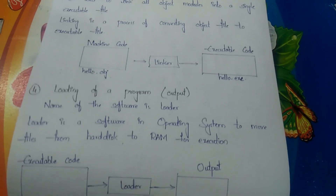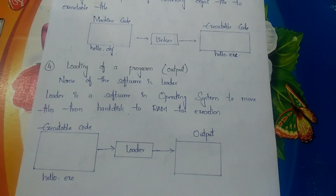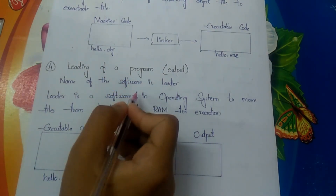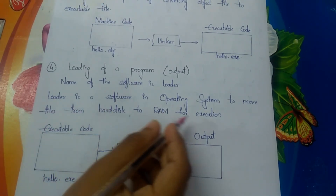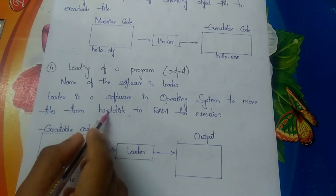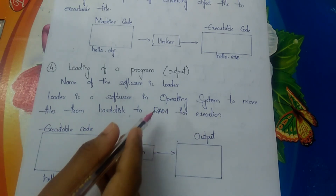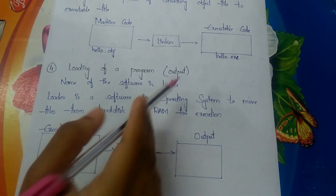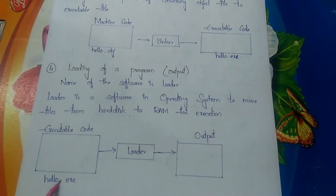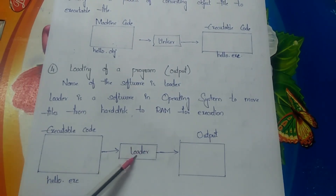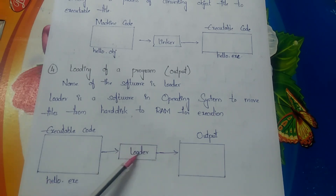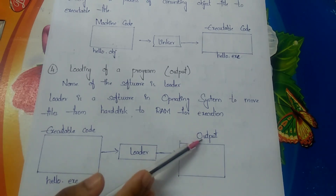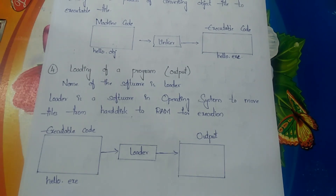The fourth and final step is loading of a program, which produces the output. The loader is a software in the operating system used to move files from the hard disk to RAM for execution. The executable file hello.exe, stored on the hard disk, is moved to RAM by the loader, and finally the program executes and the output is produced.